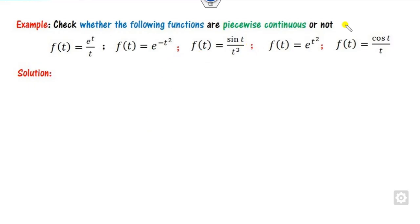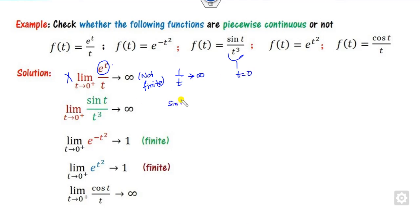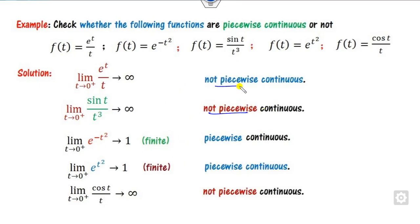For these functions, clearly the function is undefined at t = 0. The limit as t approaches 0 from the positive side: for 1/t it goes to infinity, which is not finite, so it is not piecewise. For sin(t)/t², this value is undefined at 0, and 1/t² goes to infinity again. So clearly these two functions are not piecewise continuous, while the remaining ones with finite limits are piecewise continuous.